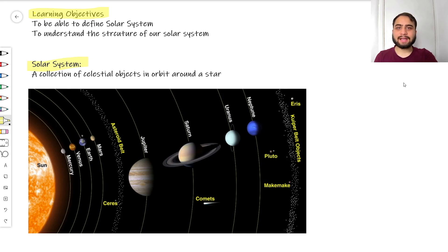Now let's have a look at what the definition of a solar system actually is. We can define solar system as a collection of celestial objects—so that really means in space—a collection of objects in orbit around a star.